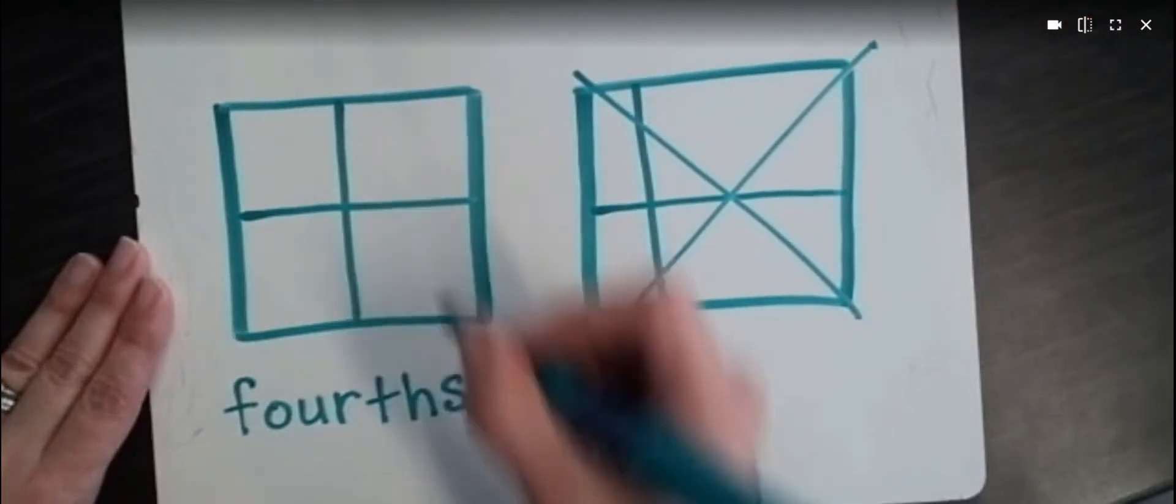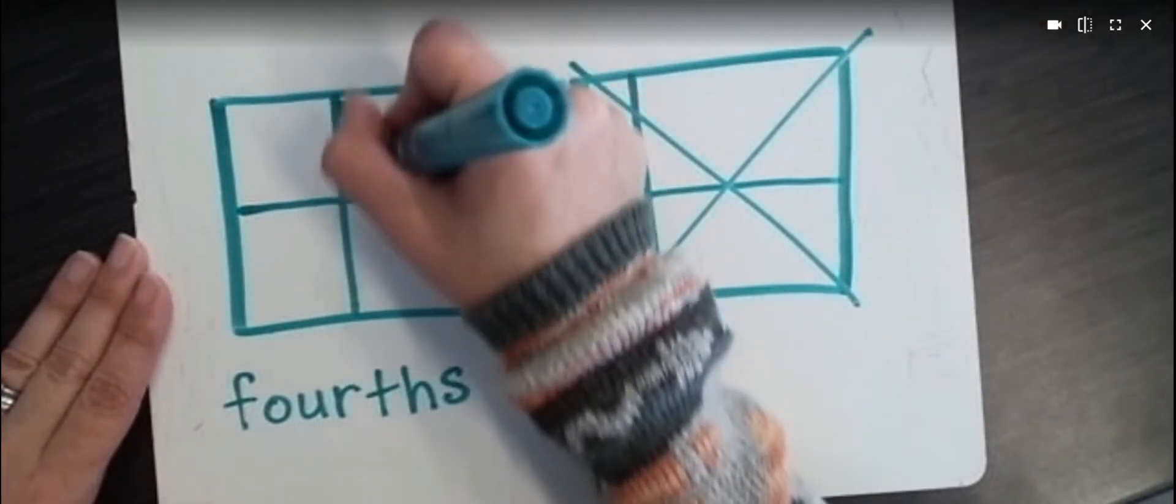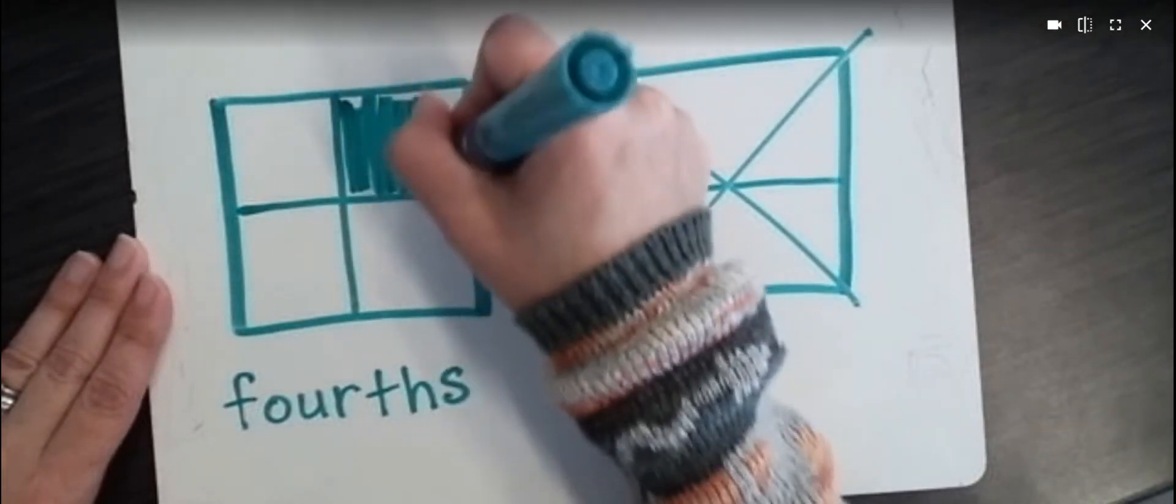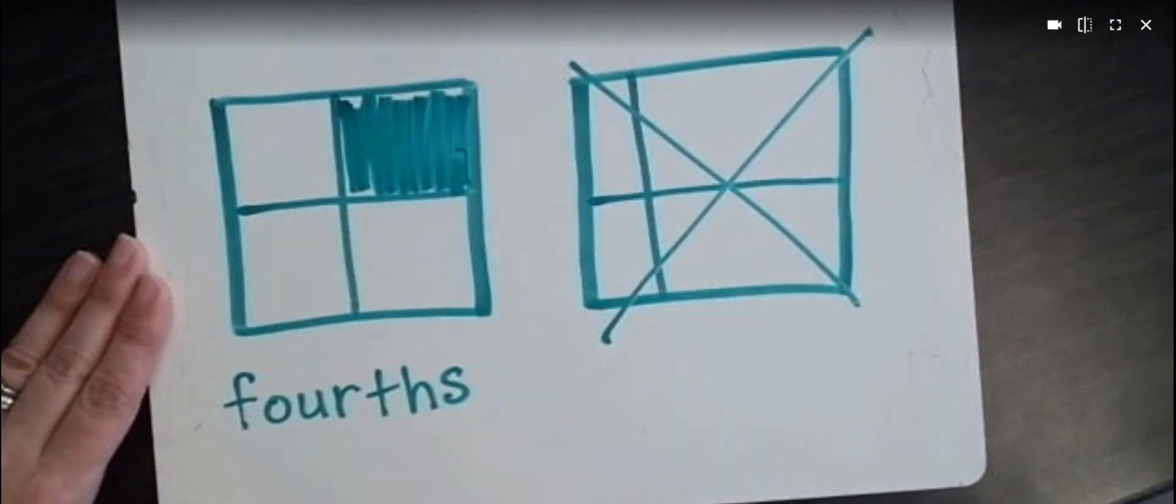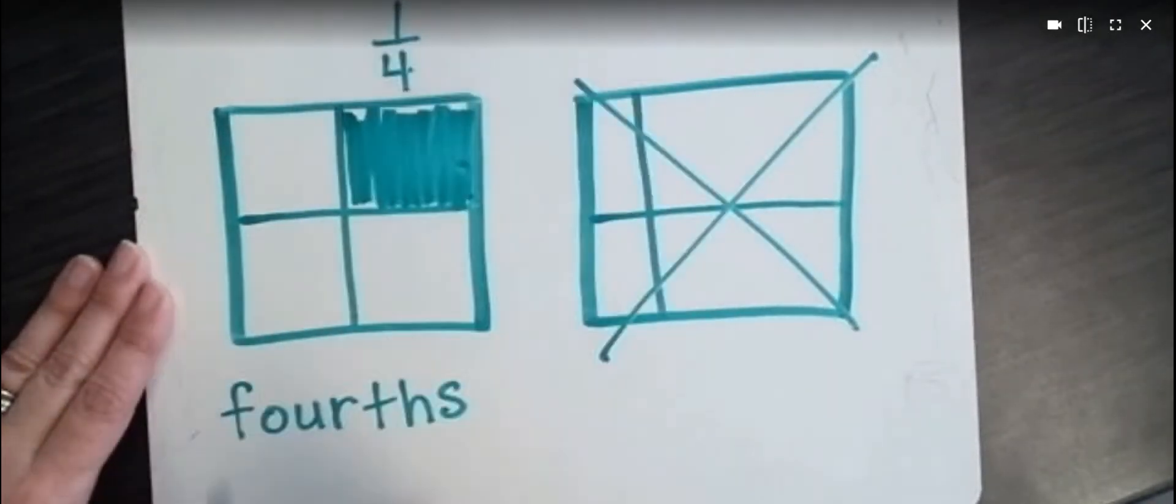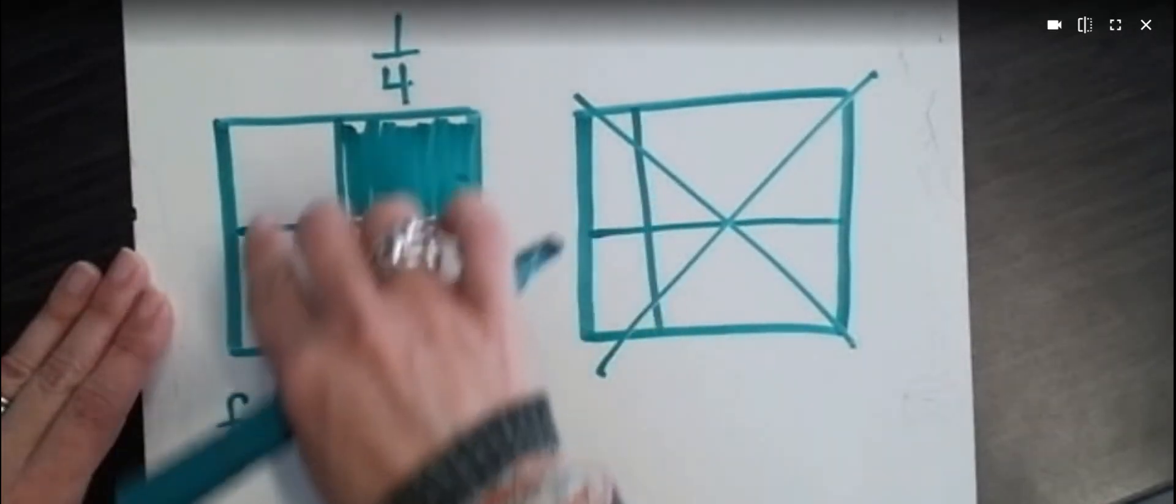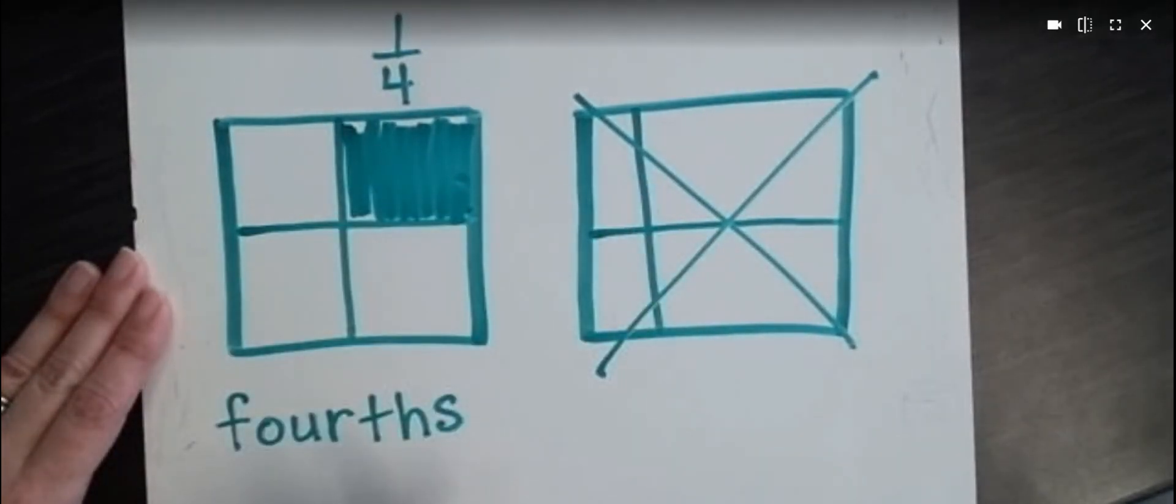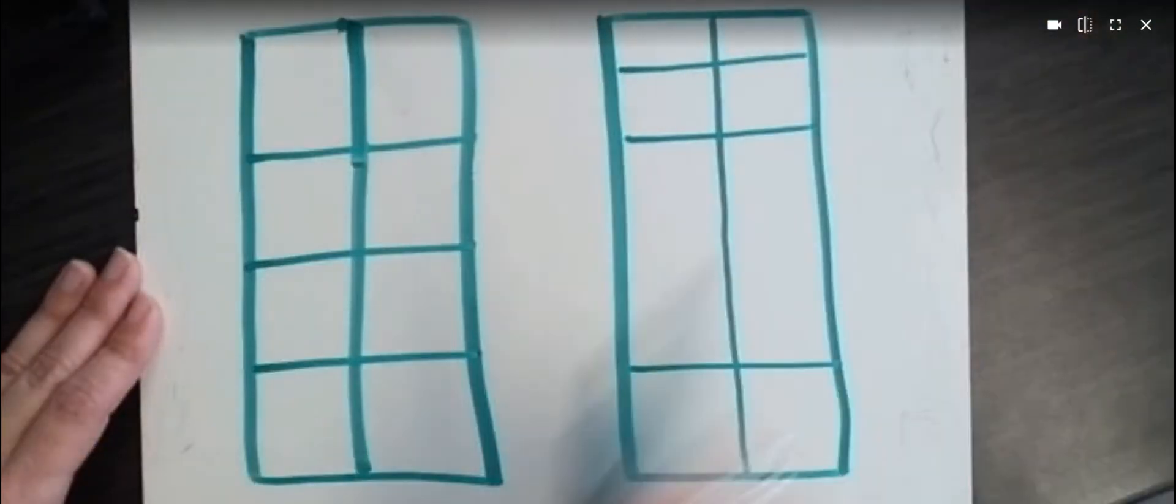So this is the one that's divided into fourths, or four equal parts. Not this one. So if I were to shade in one part, if I were to color in one part of this square, that would be one-fourth. That would be one-fourth of the whole.